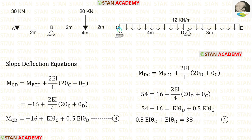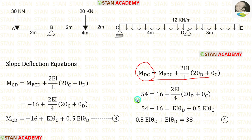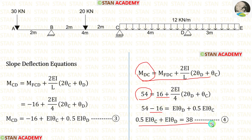Now let us make the slope deflection equations for span CD. Applying the fixed end moments and the span length of 4 meters, and knowing MDC equals 54 kN·m, we substitute 54 for MDC and take 16 to the left side where it becomes negative, forming the second equilibrium equation.